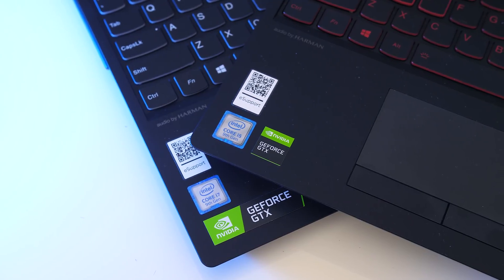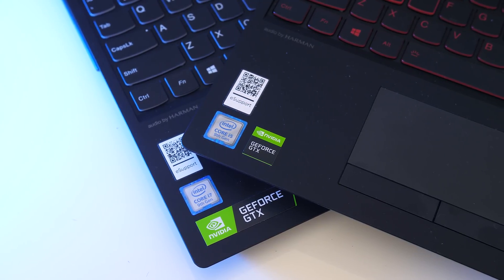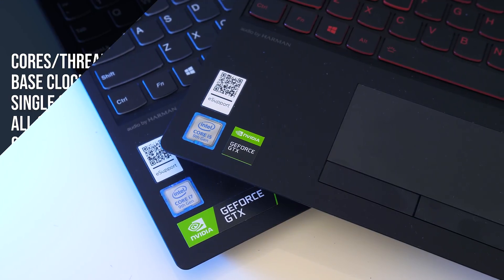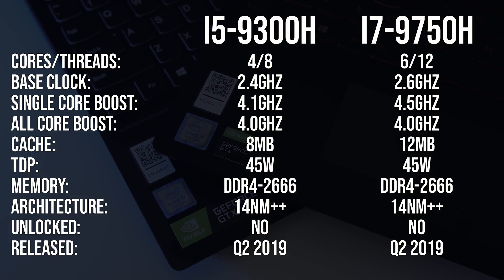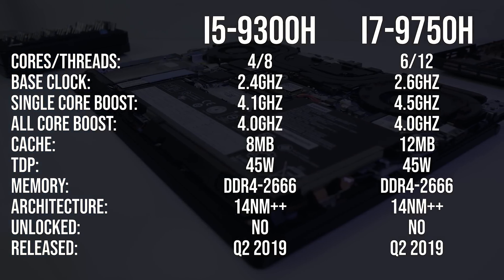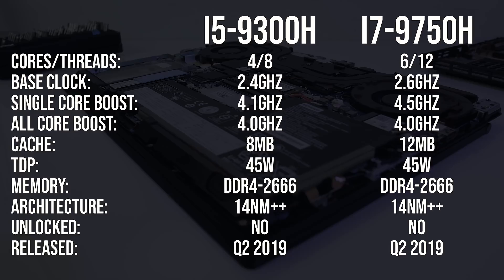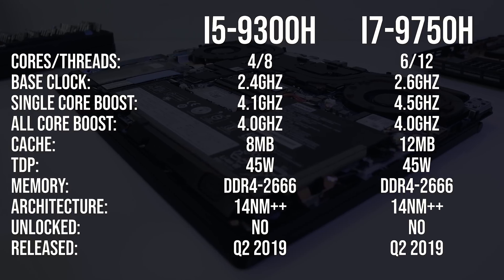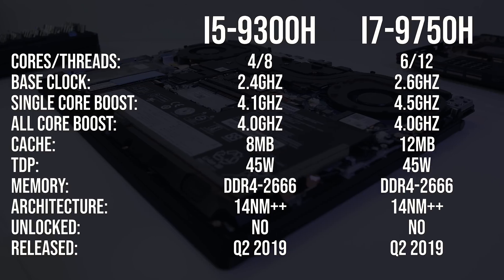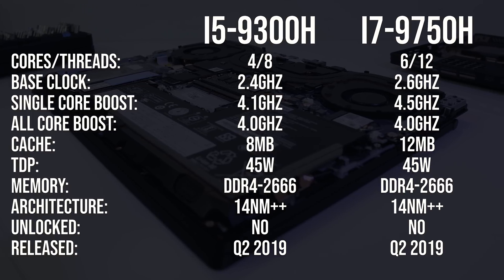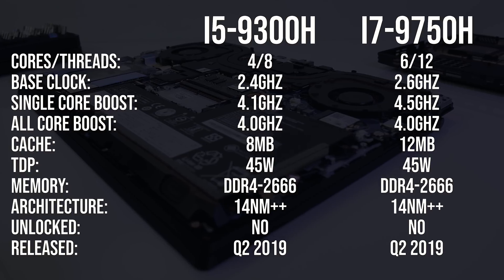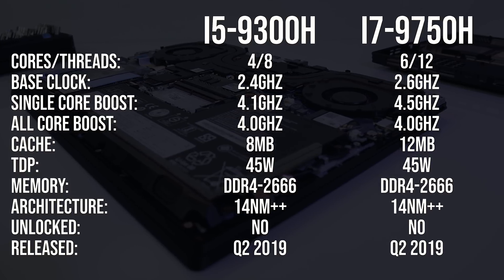Let's find out what the differences are between the Intel i5-9300H and i7-9750H laptop processors. Starting with the specs, the key difference is that the i7 has 6 cores versus 4 in the i5. The i7 has a 400MHz higher single core turbo boost speed, however when all cores are active they both max out at 4GHz. Along with 50% more cores, the i7 also has 50% more cache, otherwise both chips use the same 9th gen architecture.